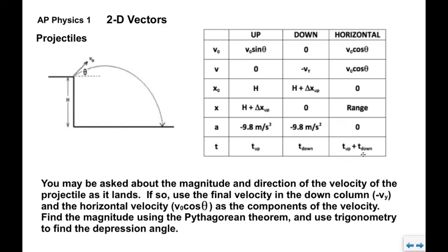You may be asked about the magnitude and direction of the velocity of the projectile as it lands. At that point, the velocity has an x-component and a y-component. Find the magnitude using the Pythagorean theorem, and use inverse tangent to find the depression angle at landing — the angle will be below the horizontal because the projectile is moving to the right and downward.